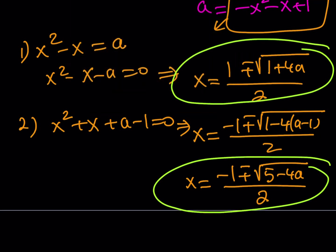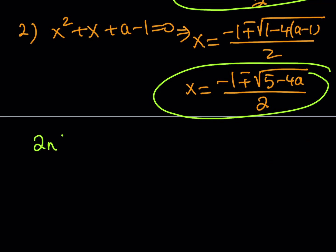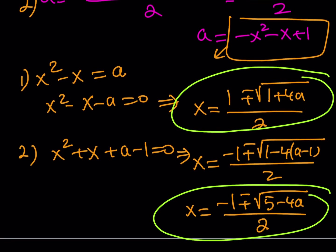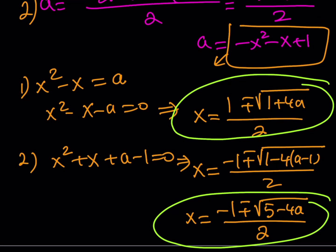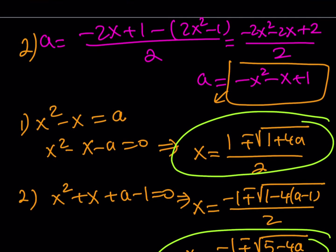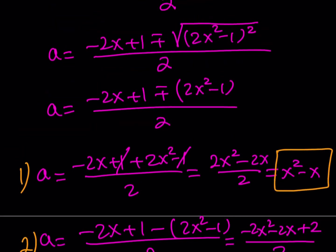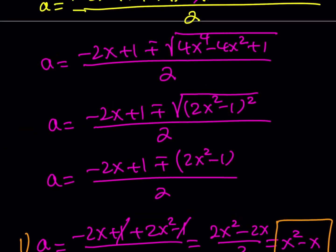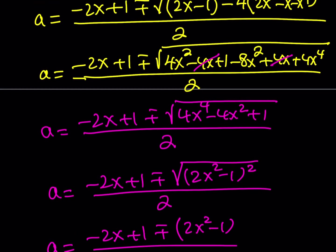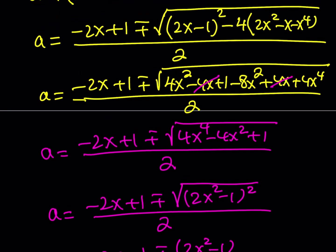That completes the first method. I said I'd show two methods, so here's the second. The second method differs from the first — instead of solving for a and then converting to an equation in x, we'll use a different approach directly on the original expanded equation.